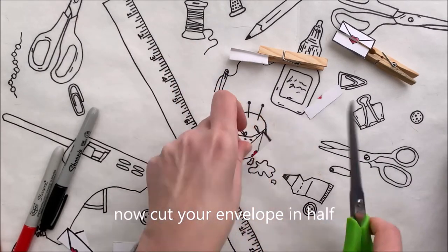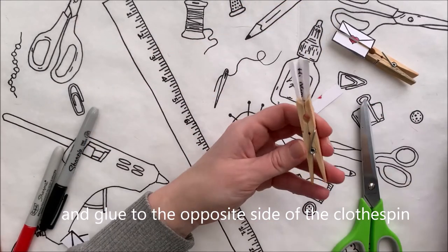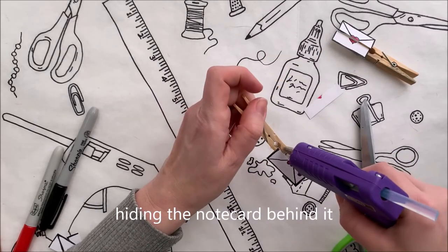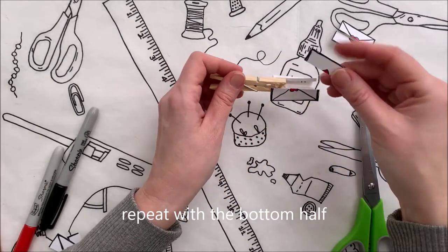Now cut your envelope in half and glue to the opposite side of the clothespin. Line up the envelope to the note card, hiding the note card behind it. Repeat with the bottom half.